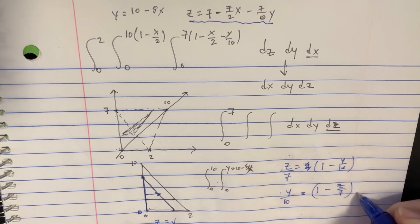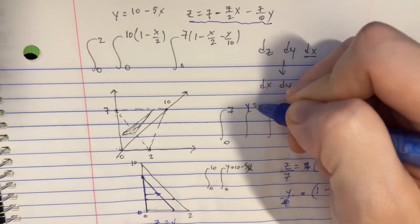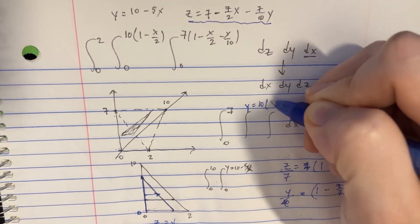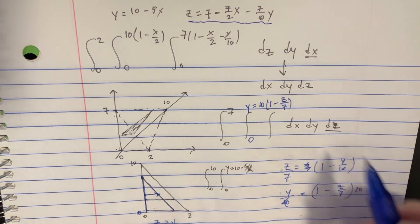And we'll get y over 10 equals 1 minus z over 7. And then we can multiply this by 10. And so now we've got our new y limit. So that's what we're going to use here. y equals 10 times 1 minus z over 7. Going from 0. And we're close.